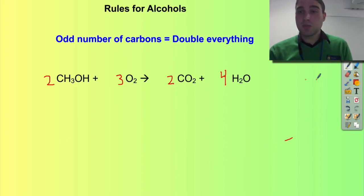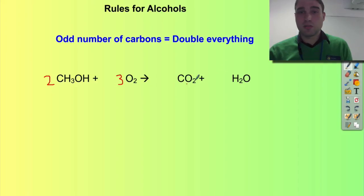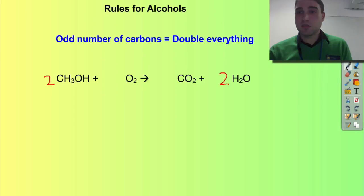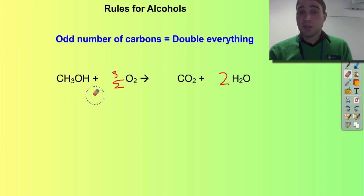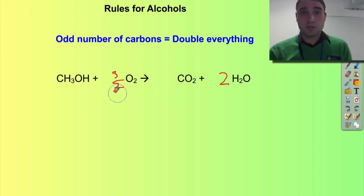And again, if we wanted to use fractions, we could: we'd have one methanol and three-over-two oxygens on this side, giving one carbon dioxide and two water molecules. Or we could have decimals — 1.5 oxygen molecules — but I think it's just easier having all integers.